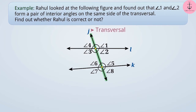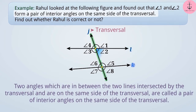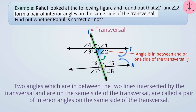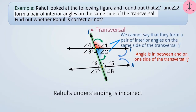We need to determine whether angle 1 and angle 2 form a pair of interior angles on the same side of the transversal. Angle 2 is in between lines L and K and on one side of transversal J. However, angle 1 is on the same side of the transversal as angle 2 but is not in between lines L and K. Therefore, these two angles do not form a pair of interior angles on the same side of the transversal, so Rahul's understanding is incorrect.